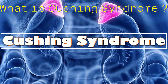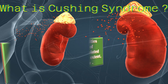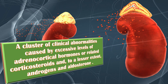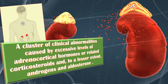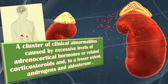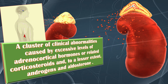Cushing syndrome is a disorder of the endocrine system. It is a cluster of clinical abnormalities caused by excessive levels of adrenocortical hormones, particularly cortisol or related corticosteroids, and to a lesser extent androgen and aldosterone.